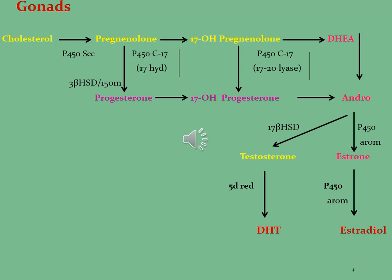DHEA is changed into androstenedione by the effect of enzyme 17,20-lyase. Let's see how pregnenolone and 17-hydroxy pregnenolone are changed into progesterone and 17-hydroxy progesterone respectively. Pregnenolone is changed into progesterone by the effect of enzyme 3β-HSD, and 17-hydroxy pregnenolone is changed into 17-hydroxy progesterone by the effect of enzyme 17,20-lyase. Androstenedione is then changed into testosterone by the effect of enzyme 17β-HSD, and changed into estrone by the effect of enzyme P450 aromatase.